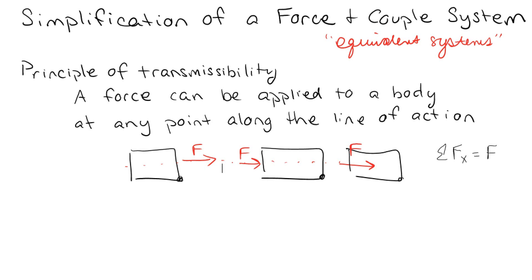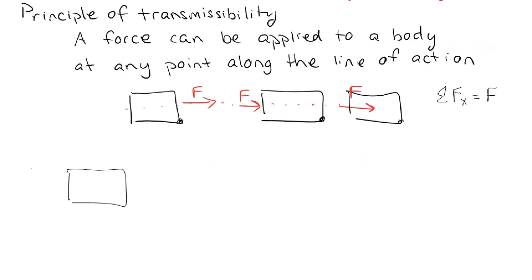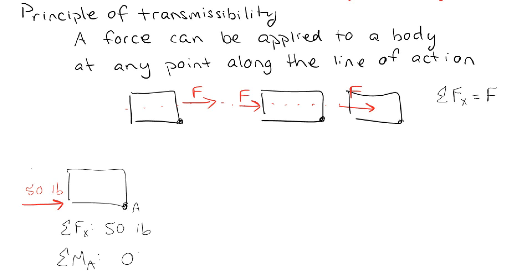Let's do another version of that. Say we've got a little box with a 50-pound force right here. If we have the 50-pound force right here, then we can say the sum of the forces in the x direction is going to be 50 pounds. And if I have point A, the sum of the moments about A would be 0.